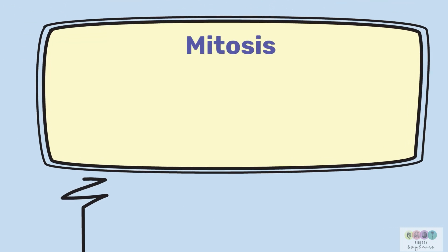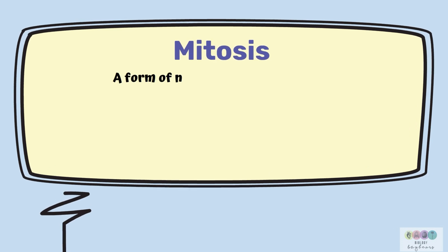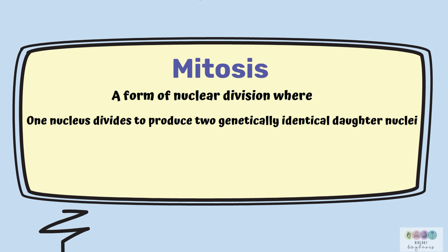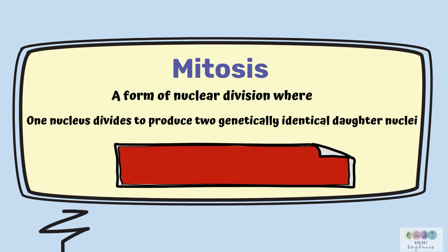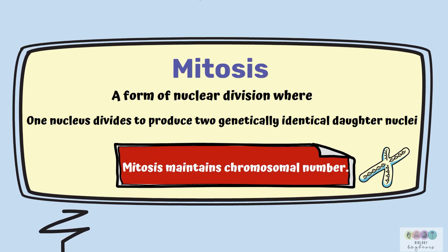Mitosis is a form of nuclear division where one parent nucleus will divide to produce two genetically identical daughter nuclei. Therefore, mitosis maintains chromosomal number and produces genetically identical daughter nuclei.